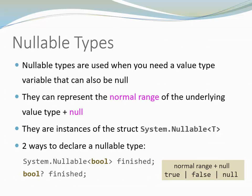A bool is another example for a value type. Notice that the possible values for finished are either true or false or null. So it's the normal range of the underlying type true false in case of a boolean or the additional null value.